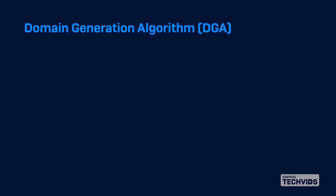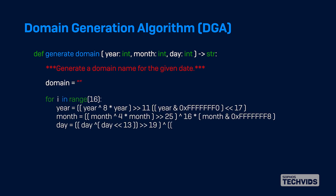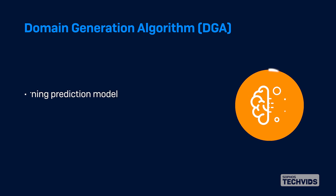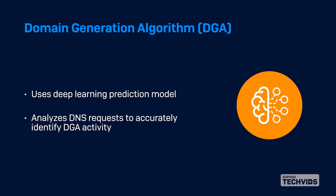Next up is the domain generation algorithm detection engine. Malware can employ DGAs to avoid detection, creating thousands of domain names which could potentially be used during an attack. This example shows a date-based DGA. It's very difficult to detect this or block the active C2 channel, but not for Sophos NDR. By using a deep learning prediction model, it analyzes DNS requests and accurately identifies DGA activity.